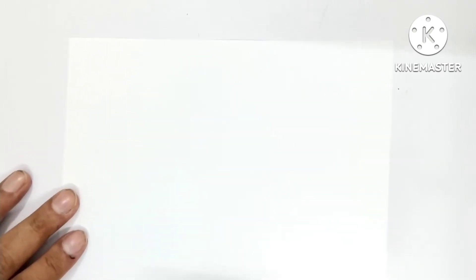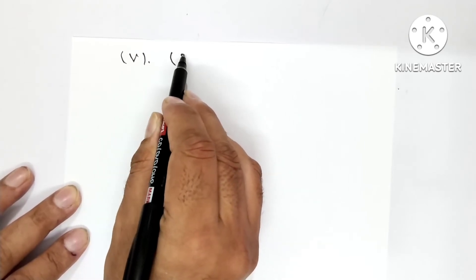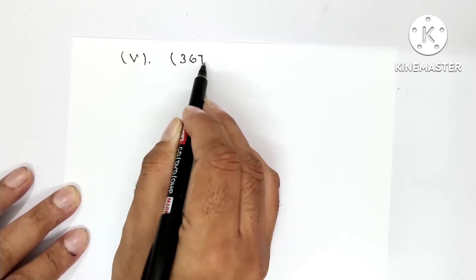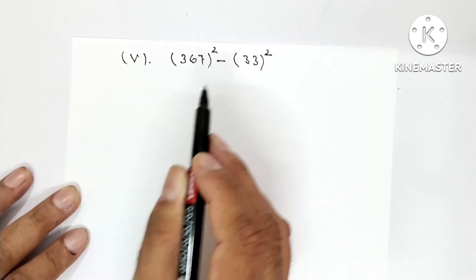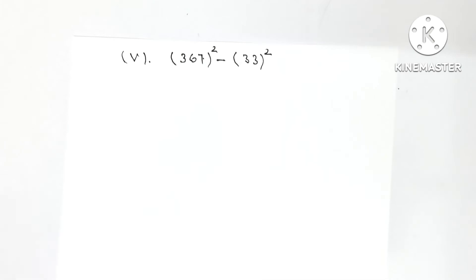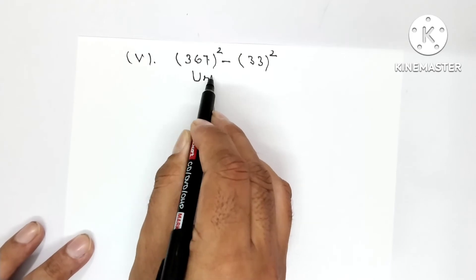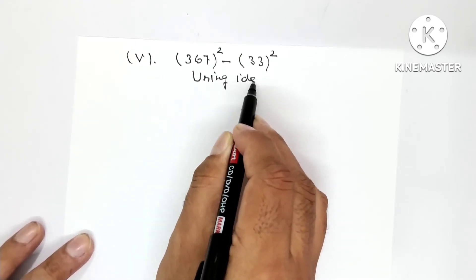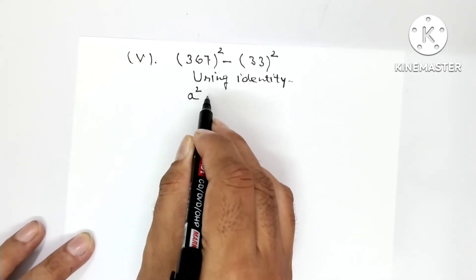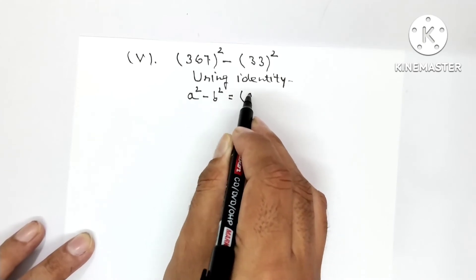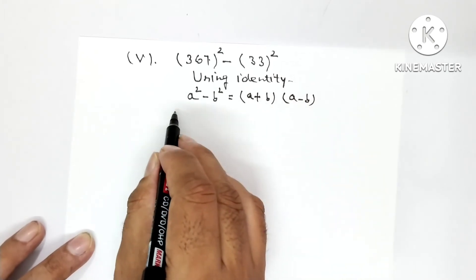Now let's do part number 5. 367 whole square minus 33 whole square. So here a is 367 and b is 33. Using identity: